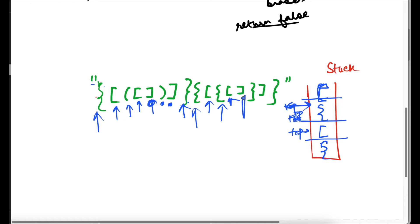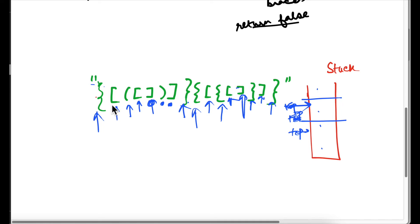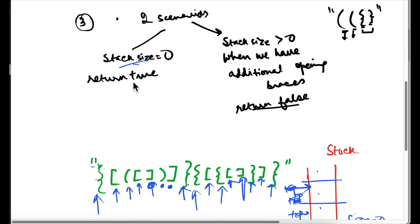We have encountered a closing brace — it matches the top, so we pop it. Moving on to the next: the closing curly brace matches the opening curly brace on top — we pop. A closing square brace matches the opening square brace on top — we pop. Finally we have reached the last closing brace, which matches the opening brace on top — we pop. We have reached the end of the string and the stack contains nothing; size is zero. After the for loop, if size is zero we return true — it's a valid parenthesis.